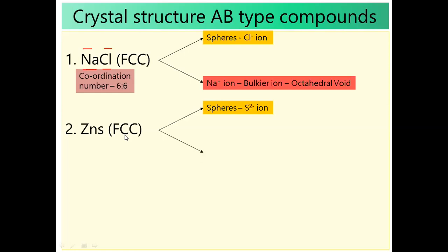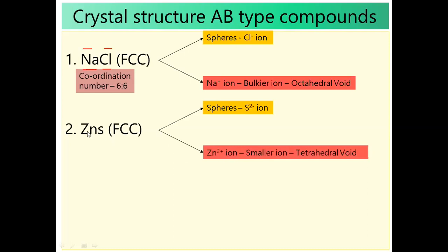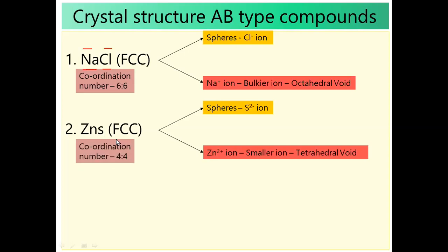The position of Zn²⁺ is half of the tetrahedral voids, because we have the same number of Zinc and Sulfur, so half of the tetrahedral voids are occupied by Zn²⁺ ions. Coordination number: tetrahedral void has coordination number 4, so both ions show coordination number 4×4. Half tetrahedral voids occupied means coordination number 8 changes to 4. ZnS shows coordination number 4×4.